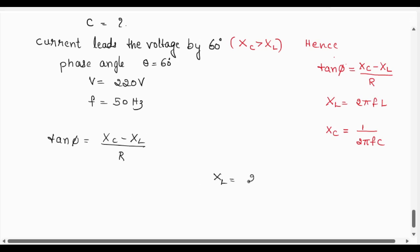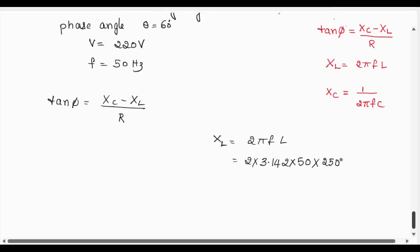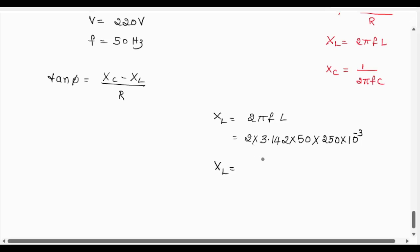First we need to find the value of XL. So XL = 2πfL, that is 2 × 3.142 × frequency is 50 hertz, so 50 × inductor value is 250 × 10⁻³. XL = 78550 × 10⁻³, or XL can be written as 78.5 ohms. So we got the value of XL.